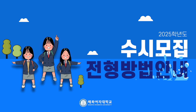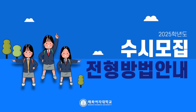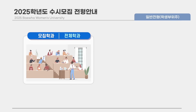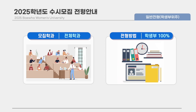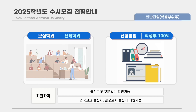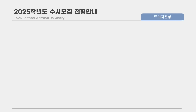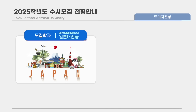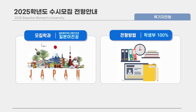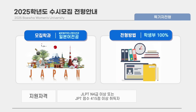수시 모집 전형방법에 대해 설명해드리겠습니다. 일반전형은 모든 학과에서 모집하며, 전형방법은 학생부 100%를 반영합니다. 특기자전형은 일본어 전공에서 모집하며, 전형방법은 학생부 100%를 반영합니다. 추가로 자격증 급수 및 점수에 따라 가산점을 부여합니다.